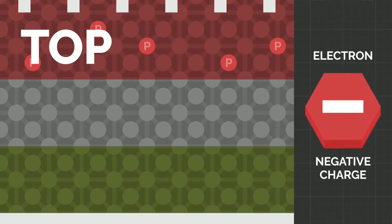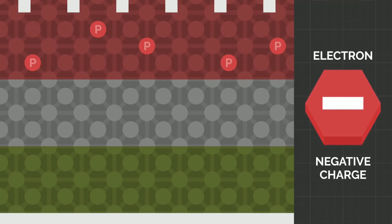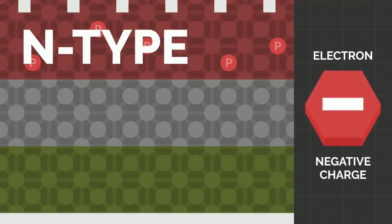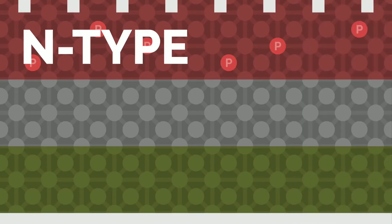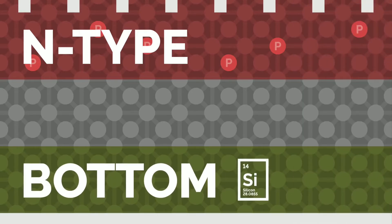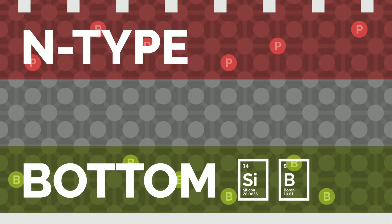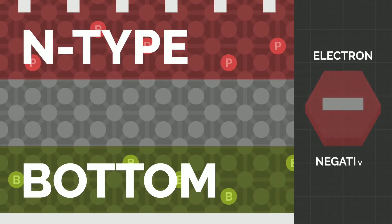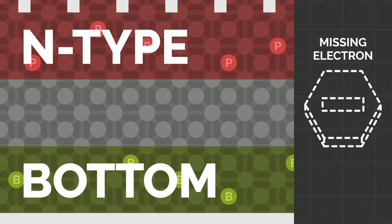The top layer is also called negative type, or n-type, as it favors the collection and transport of electrons. The thin bottom layer contains both silicon and an element, such as boron, that has fewer electrons than silicon. This gives the bottom layer fewer electrons that are free to move, therefore making the material less conductive for electrons.